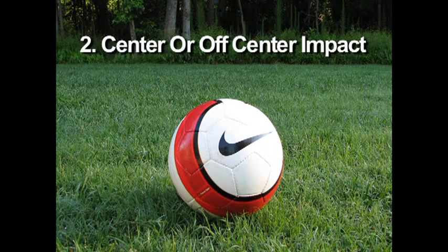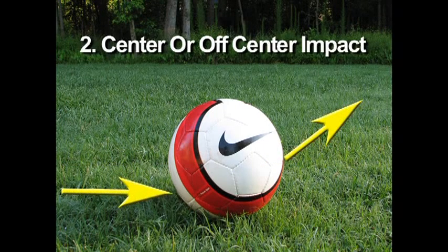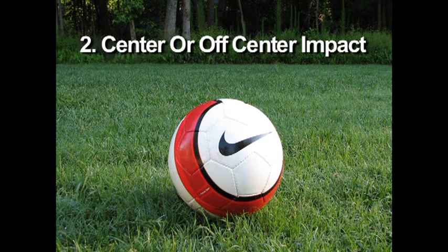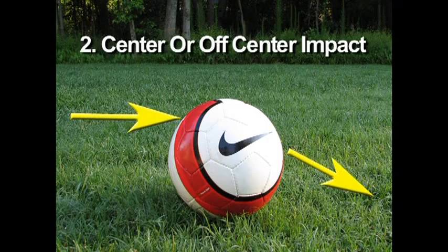Number two is center or off-center impact. If the ball is struck in the center, the ball will go straight. If the ball is struck at the bottom, the ball will deflect up — much like a pop fly in baseball. If the ball is struck above center, the ball will deflect down.